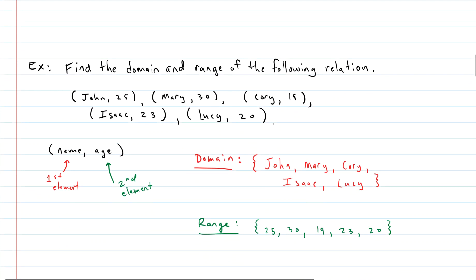Here's an example: find the domain and range of this relation. This specific relation has a bunch of names as the first element and their corresponding ages as the second element. The ages and names are related here, but they don't have to be. So the domain takes all the names: John, Mary, Cory, and so forth. The range takes the ages: 25, 30, 19, and so on. We just list them all — that's how you find the domain and range of a relation.